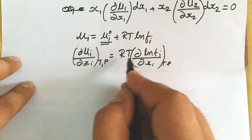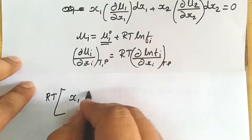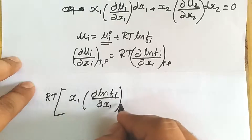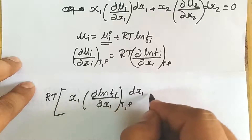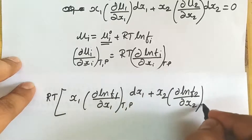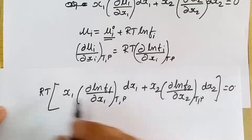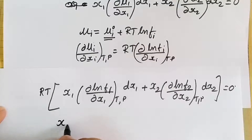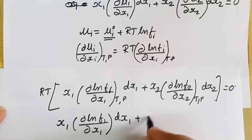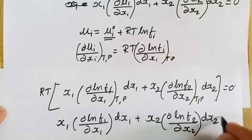Now we substitute this value of (∂μ/∂xi) into the two terms for x1 and x2, taking RT as common: RT times [x1(∂ ln f1/∂x1)dx1 plus x2(∂ ln f2/∂x2)dx2] equals 0. Dividing both sides by RT, we get: x1(∂ ln f1/∂x1)dx1 plus x2(∂ ln f2/∂x2)dx2 equals 0.